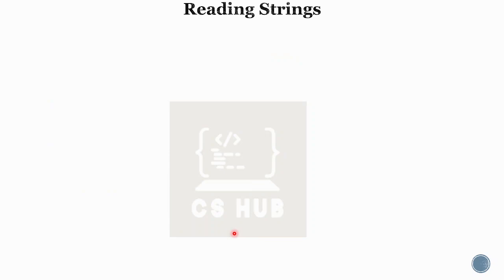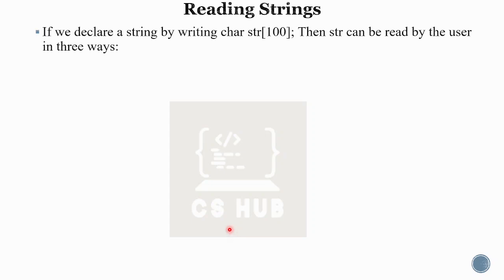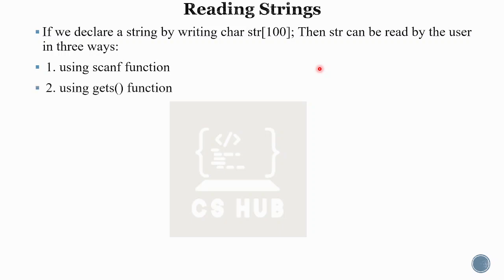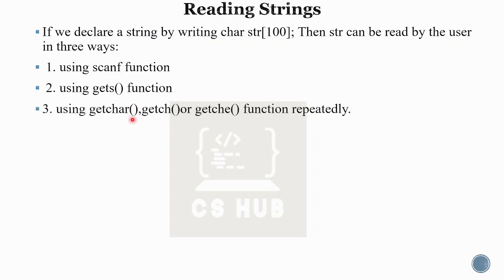In C programming, how to read a string? We declare char str of 100. This str can be read by the user in mainly three ways: first, using the scanf function; second, using the gets function; third, using the getchar, getch, or getche function repeatedly.